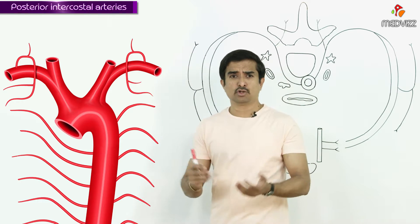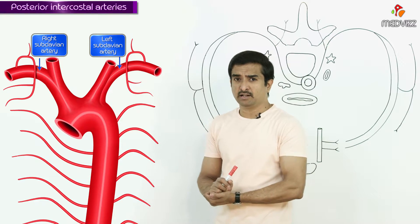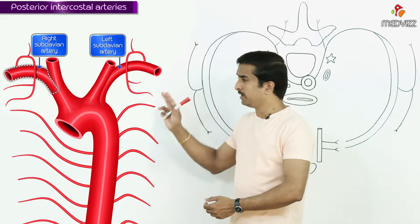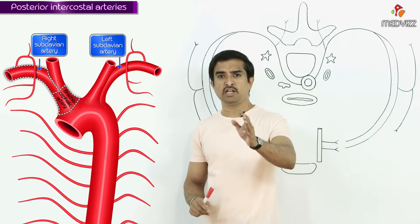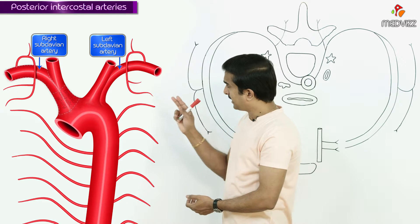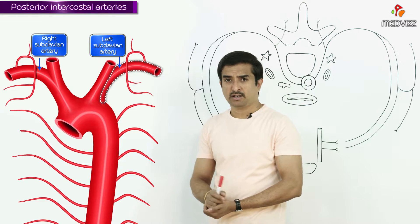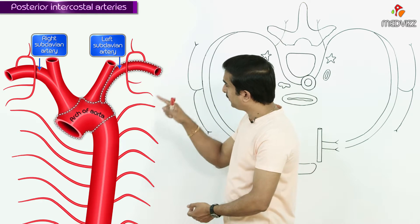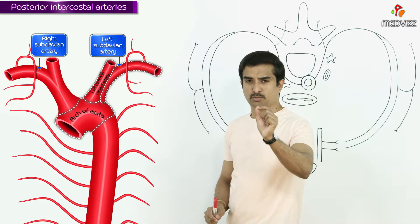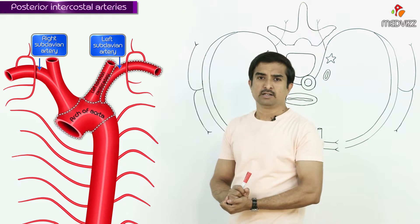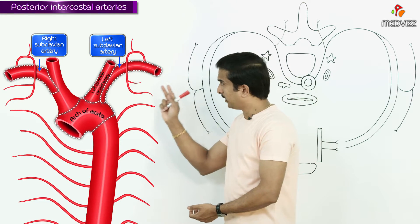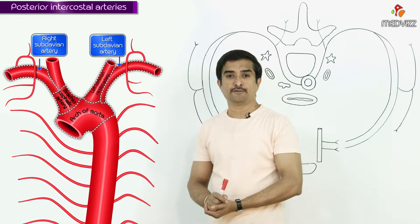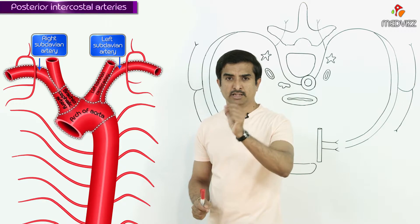The right subclavian artery is one of the terminal branches of the brachiocephalic artery, whereas the left subclavian artery arises as the third branch of the arch of aorta after giving rise to the left common carotid artery. So the right subclavian artery arises from the brachiocephalic trunk directly, but the left one arises directly from the arch of aorta as its third branch.